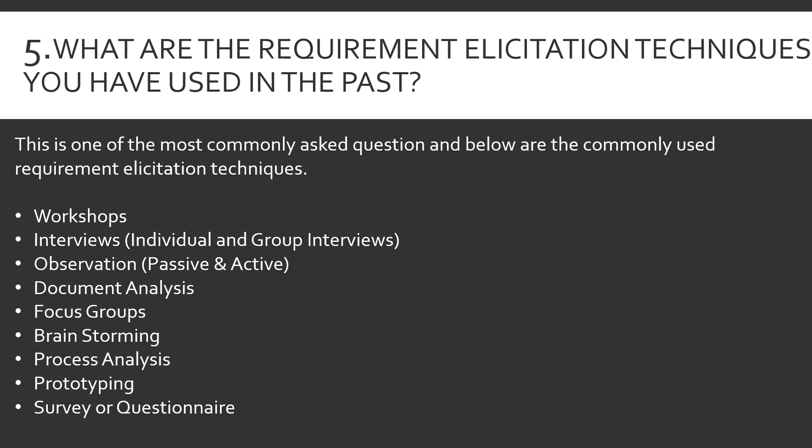The fourth technique is document analysis — reviewing documents available on the process, procedures, and business rules. The business rule we spoke about in the previous question would be found through document analysis and translated into a functional requirement. The next technique is focus groups and brainstorming, which are similar to workshops. Brainstorming involves taking one item, gathering ideas and views from people, ranking them, and translating them into requirements along with their priorities.